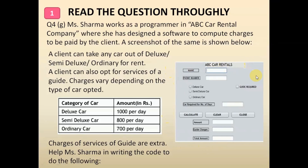This is the design part of the problem. There is one label for name and a text field in which the name will be entered. Then there is a phone number label and a text field for phone number. Then there are three radio buttons — one for deluxe, semi-deluxe, and ordinary car. There is a checkbox for guide required. A text field for number of days. Three buttons: Calculate, Clear, and Close. Text fields for amount, guide charges, and total amount are displayed at the bottom.